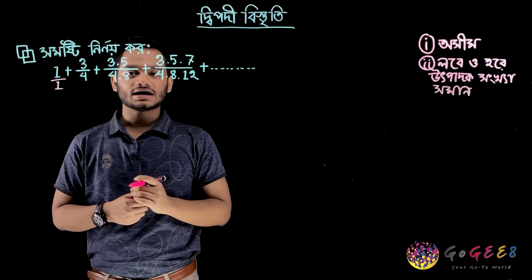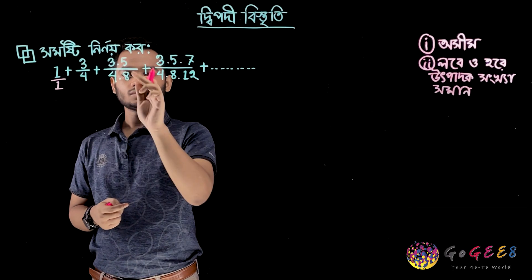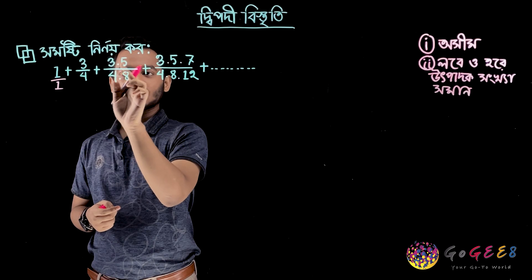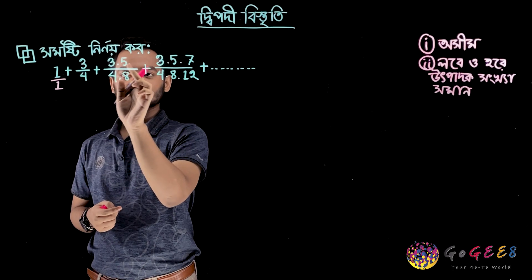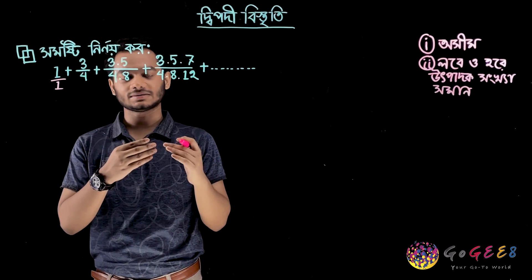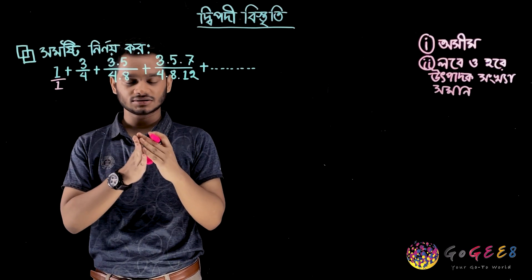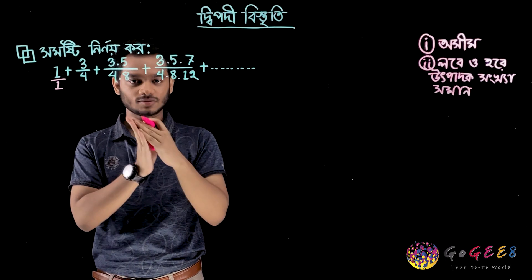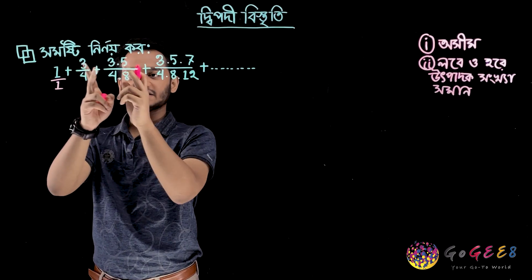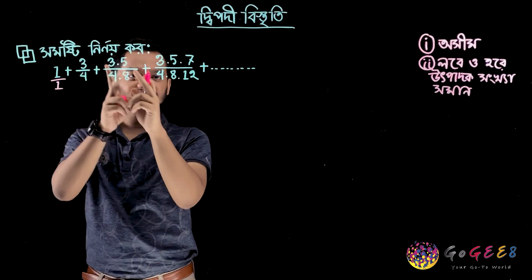If you have an example, you can talk with the example of writing. So, the example of writing when writing is complete, it shows 3, 5.